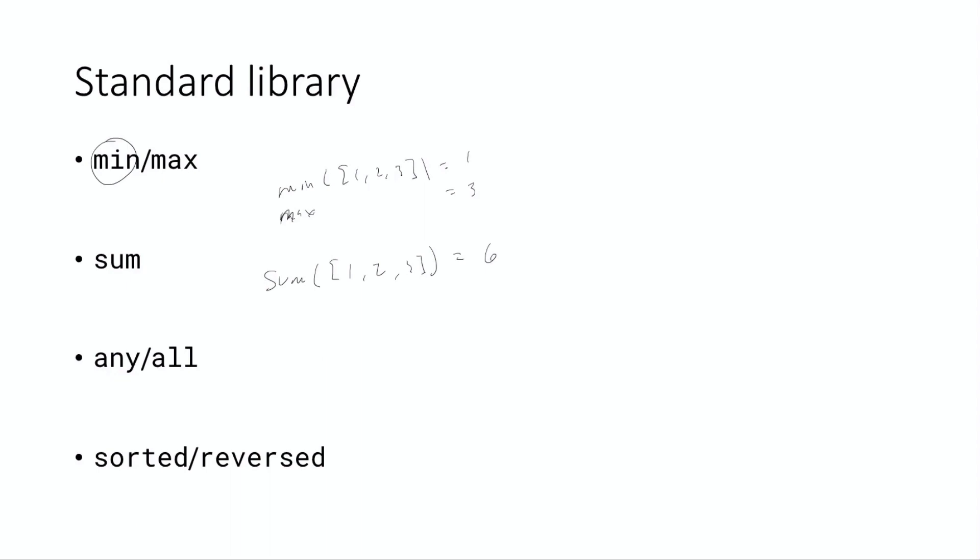Two other useful ones are any and all. These work with a collection, let's say a list of booleans. Any means at least one true. If you have a list of booleans, any means that if at least one of the booleans in that list is true then it'll return true. All means all are true and then it'll return true. That's really useful if you have a list of values and you want to check a certain condition on all of those values and you want to say if any of those values meets the condition or if all of those values meet the condition.